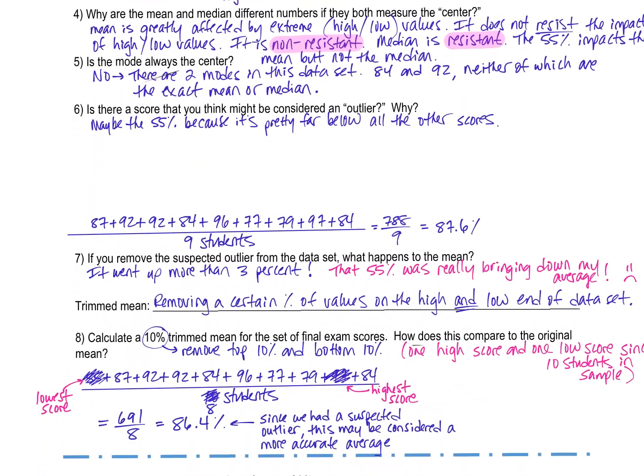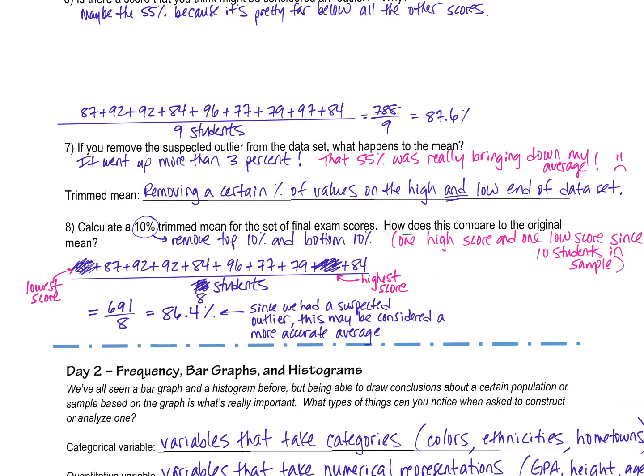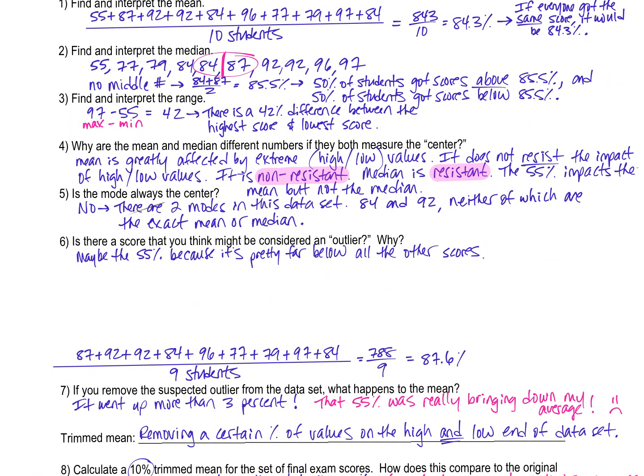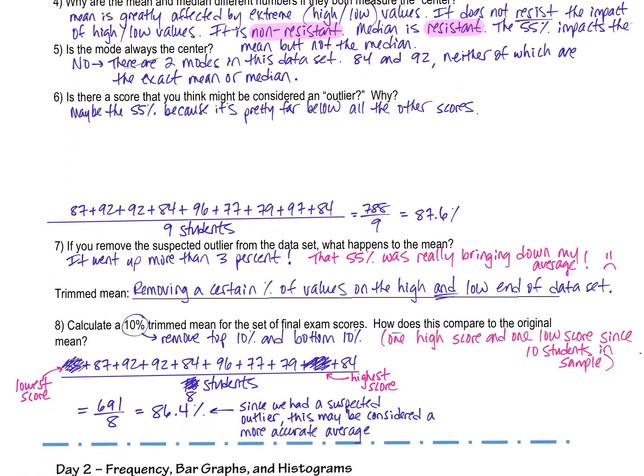Okay. One more example, if you flip the page, if I remove the suspected outlier, the 55, from my data set, what happens? So notice how these numbers up here do not include the 55. And also my number of students changed because I only have nine numbers up here now. Look at my mean now, 87.6. What was it earlier? It went from an 84.3 to an 87.6.